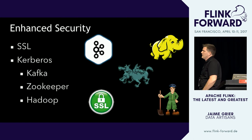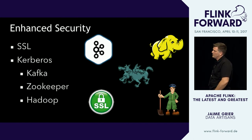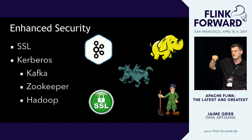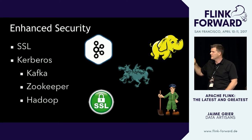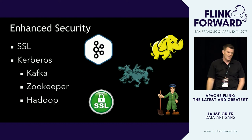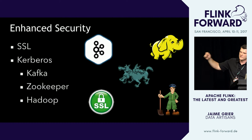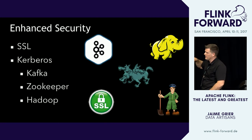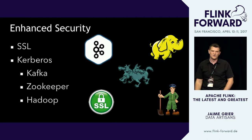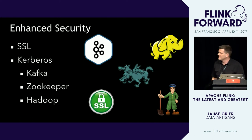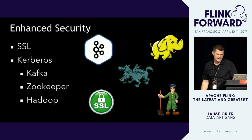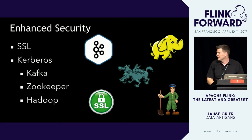New in Flink 1.2: SSL support to keep all communications within the Flink cluster secure — job manager to task managers and task managers talking to each other. There's also Kerberos support so Flink can authenticate with other systems. Supported out of the box today are Kafka, ZooKeeper, and Hadoop — the three most likely targets — with a way to extend to further systems. Important for enterprise application building.